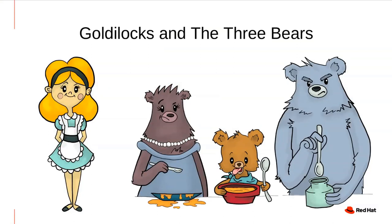She sits on the first chair and realizes it's too hard — that was Papa Bear's chair. She moves to the second and it's too soft — Mama Bear's chair. She then sits on the third and finds it's just right — Baby Bear's chair. As we progress through the story, Goldilocks always leads towards the just right option: porridge neither too hot nor too cold, a bed neither too hard nor too soft.